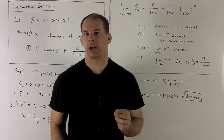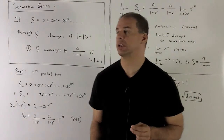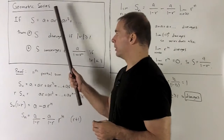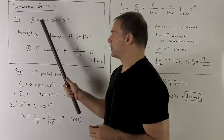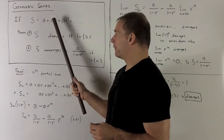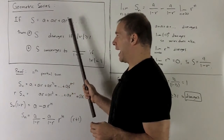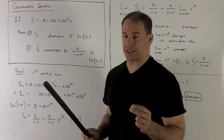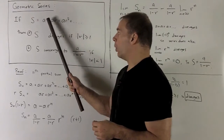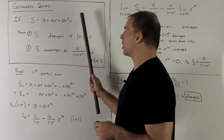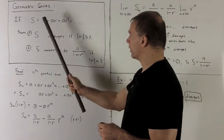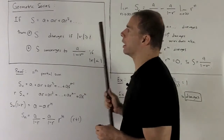Now for a closer look at geometric series. A geometric series is going to be a series of the form: we're going to have leading off each term with an a, a constant, and then it will be one, r, r squared, r cubed, r fourth, and so on.